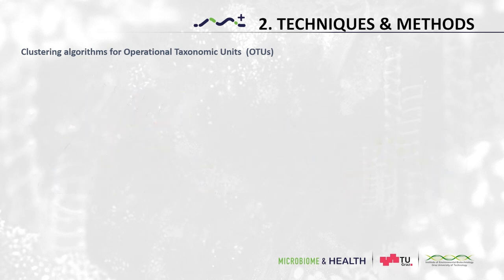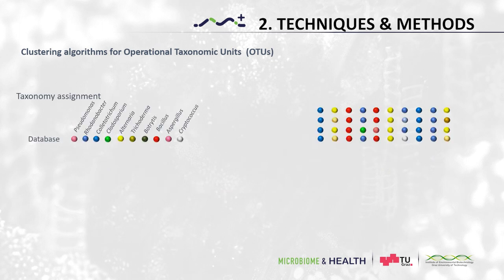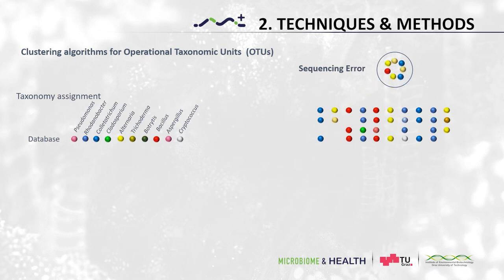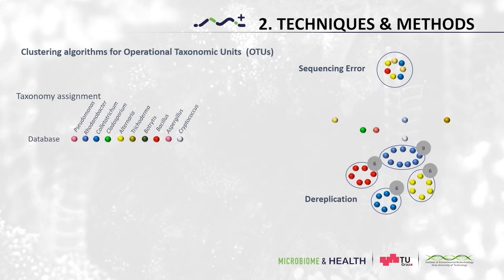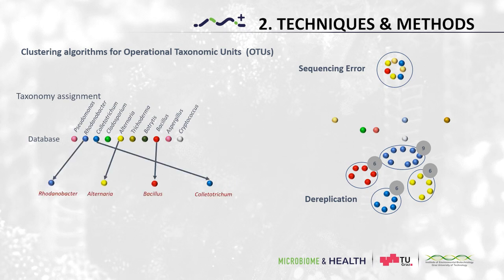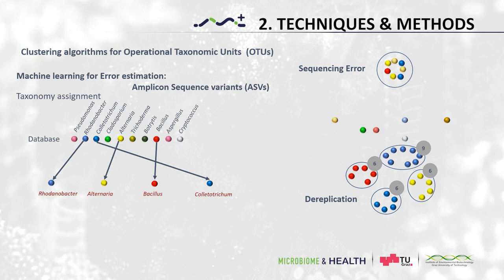Another way to do that is by using a recently published algorithm called DADA2. This method relies on identifying and removing sequencing errors before the remaining sequences are dereplicated, meaning that all identical sequences are clustered together and their abundance is recorded. We can use representative sequences to assign taxonomy to each cluster. These are called ASVs, or Amplicon Sequence Variants.